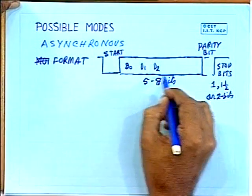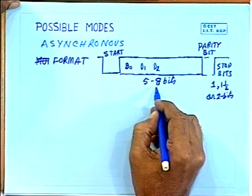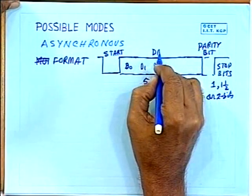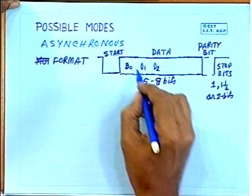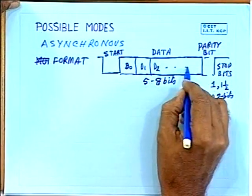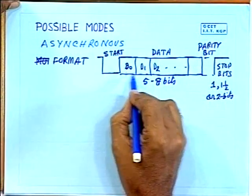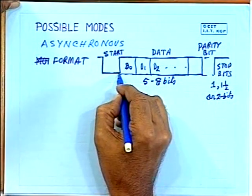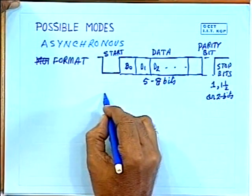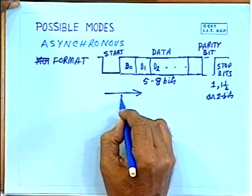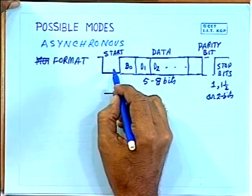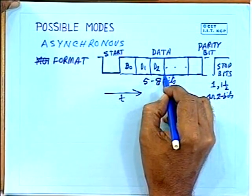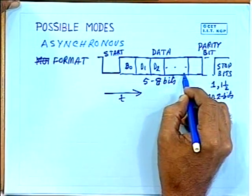That means you are sending a character which can be 5 to 8 bits in length — this is your data. You are framing it using a start bit in the beginning. In terms of time: you are sending first the start bit, then the lower-order bit (D0), then D1, then D2, and so on.